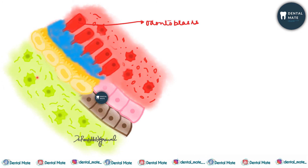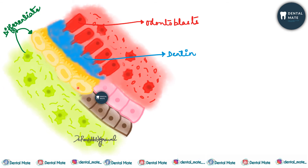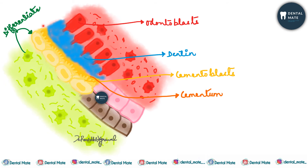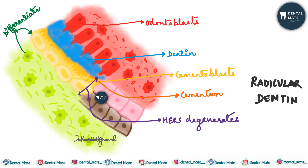The dental follicle cells differentiate into cementoblasts and lay down cementum adjacent to the dentine in the root. There is no enamel in the root. The HERS in this area disintegrates or degenerates. This is how radicular dentine is formed.